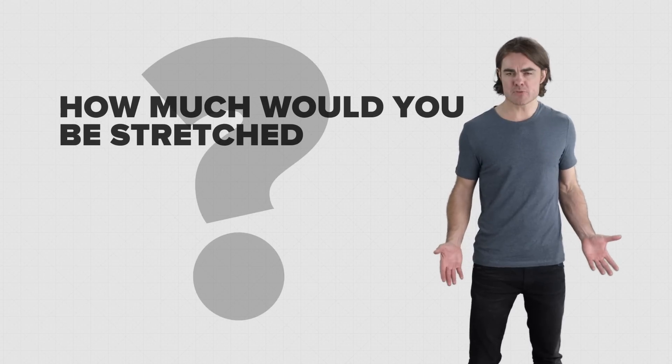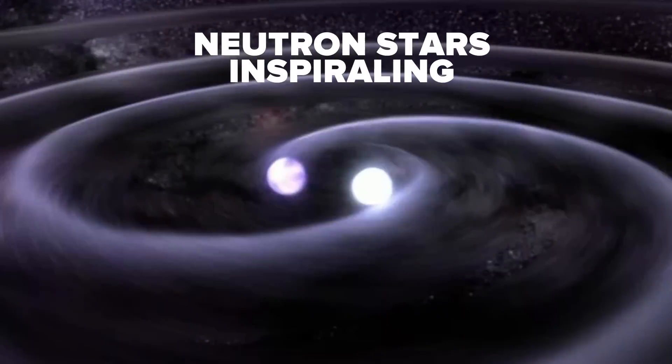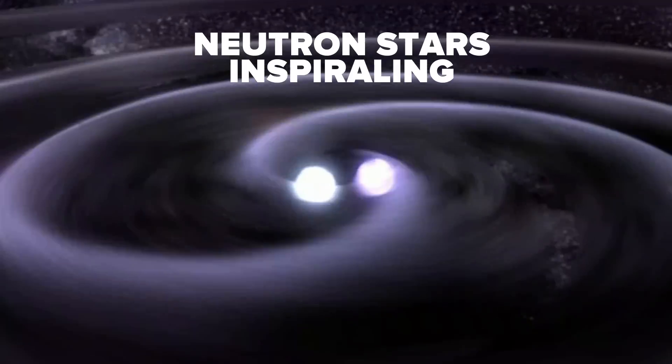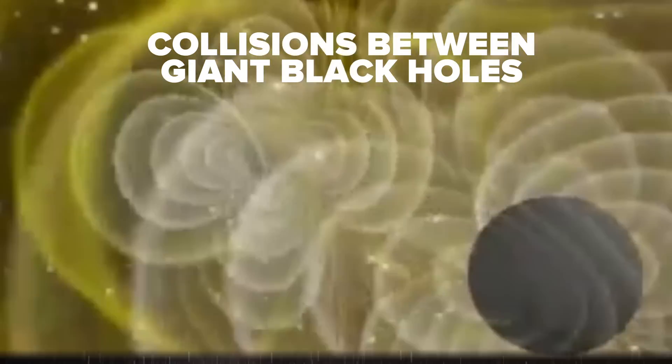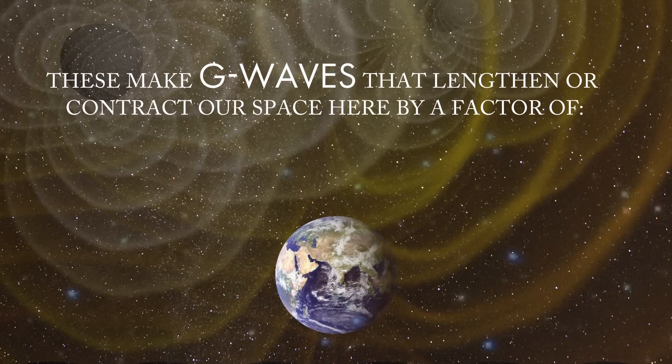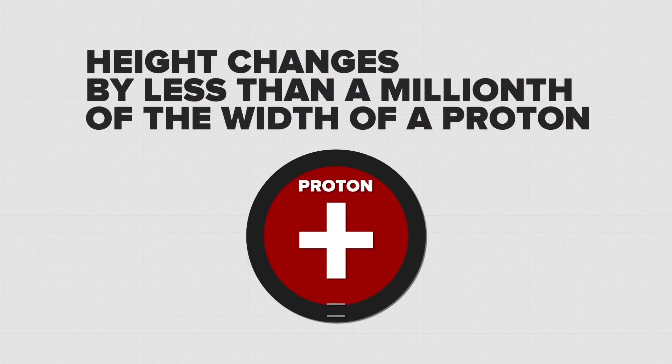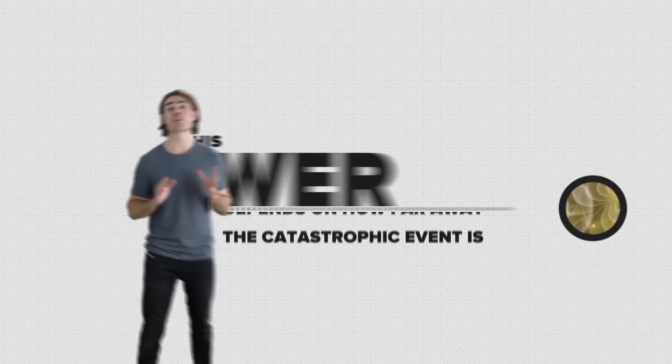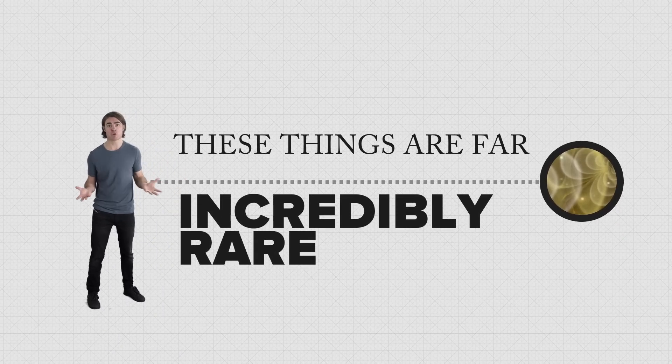How much would you be stretched? Well, let's first think about all the sorts of things that might produce detectable gravitational waves. The most insane gravitational phenomena in the universe: neutron stars or black holes in spiraling just before merger, or gravitational catastrophes like supernova explosions, or collisions between giant black holes. These make G waves that lengthen or contract our space here on Earth by a factor of 10 to the power of minus 21 or less. That changes your height by less than a millionth of the width of a proton, and this changes for the most powerful waves that have likely ever passed through you.